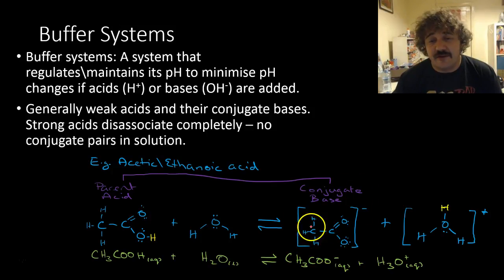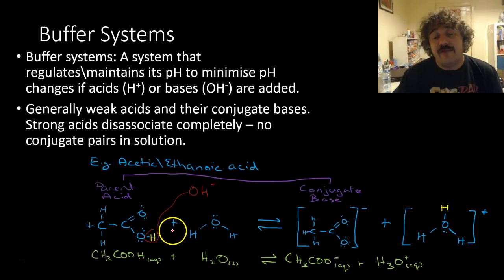Because there will be leftover parent acids that are undissociated and conjugate bases floating around, if we add some hydroxide ions, these ones here can donate a proton. If a hydroxide ion comes in, these guys can donate this proton away over to here, and it will not change the pH because hydroxide ions come in but get mopped up.